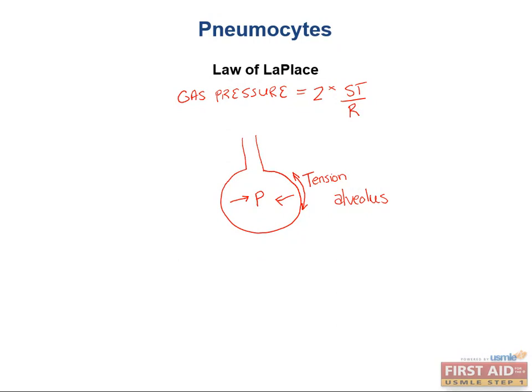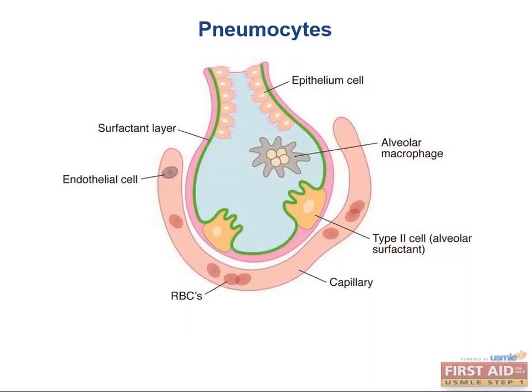And if alveoli do collapse, it requires less gas pressure to reinflate them. Finally, surfactant synthesis is a major part of fetal lung maturity. Later, we're going to talk about neonatal respiratory distress syndrome, which is where you don't have enough surfactant after birth for efficient respiration. We'll also talk about how the lecithin-to-sphingomyelin ratio works.